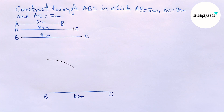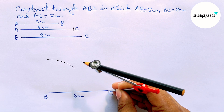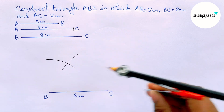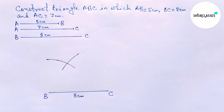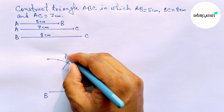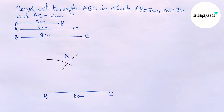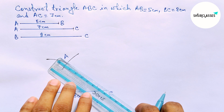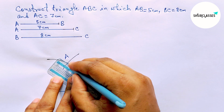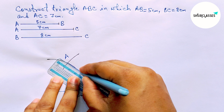Now putting the compass on the point C and cutting an arc so both arcs meet at a point. Taking that intersection as point A.